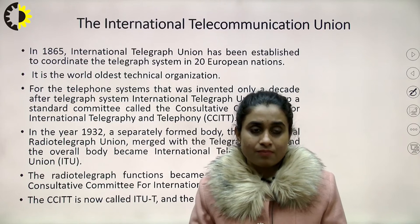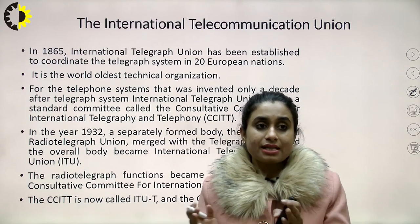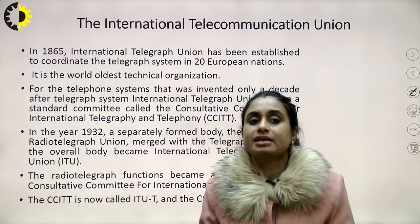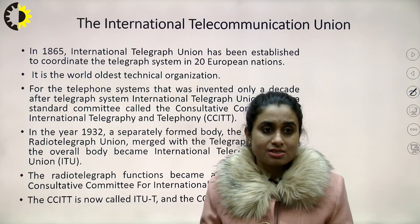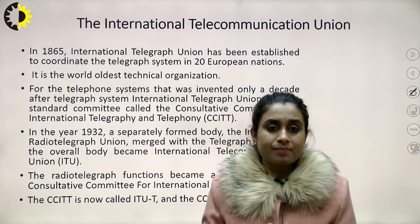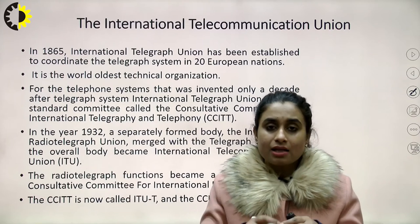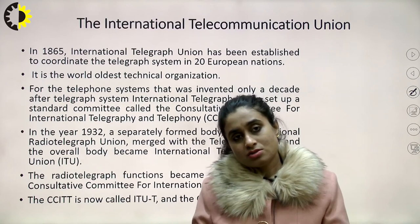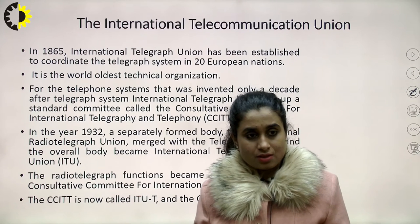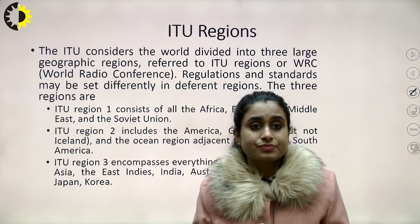ITU — the International Telecommunication Union — is the main regulatory body. In 1865, the International Telegraph Union was established to coordinate the telegraph system in 20 European nations. Then in 1932, a separately formed body, the International Radiograph Union, merged with the Telegraph Union and the overall body was named ITU. Till date we follow ITU regulations. CCITT is now called ITU-T and CCIR is called ITU-R.